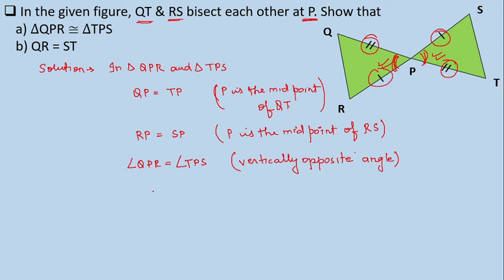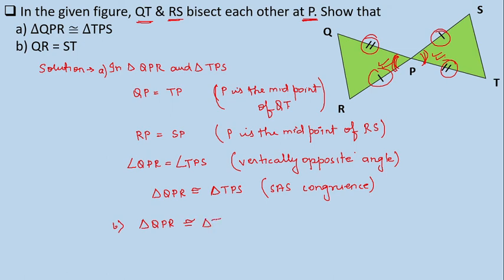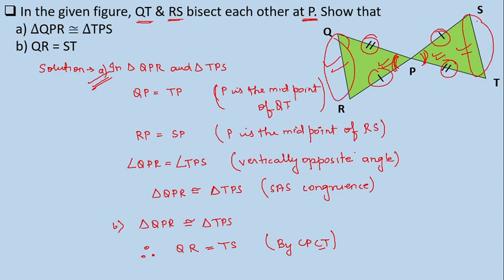Therefore, triangle QPR is congruent to triangle TPS by SAS congruence. For part B, since triangle QPR is congruent to triangle TPS as proved above, we can say QR equals TS by CPCT — corresponding parts of congruent triangles. Since these two triangles are congruent, QR equals TS.